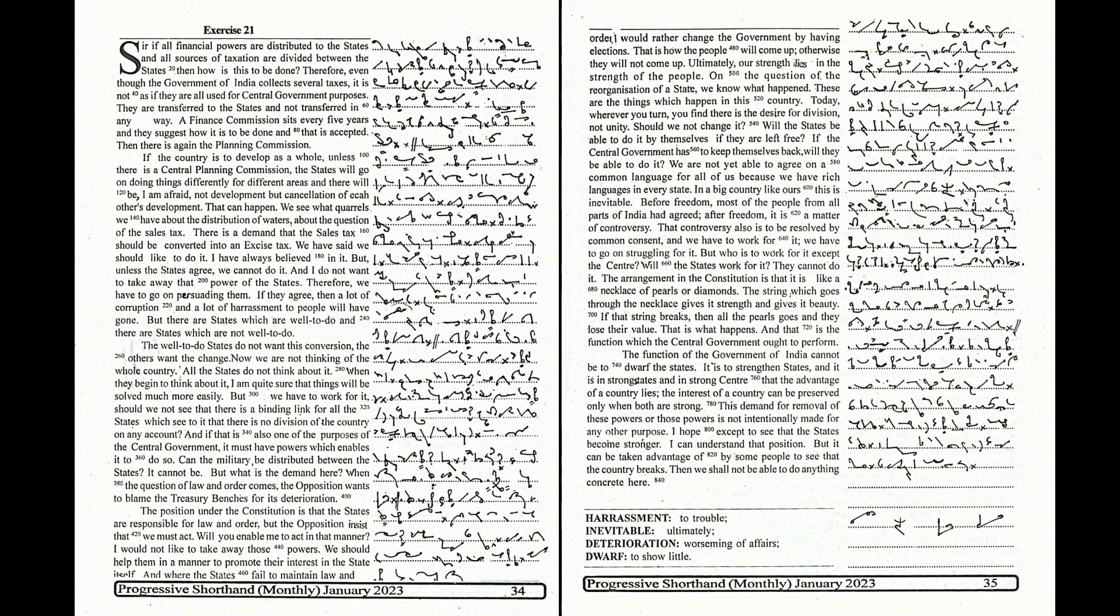But what is the demand here? When the question of law and order comes, the opposition wants to blame the treasury benches for its deterioration. The position under the constitution is that the states are responsible for law and order, but the opposition insists that we must act. That is how the people will come up, otherwise they will not come up.